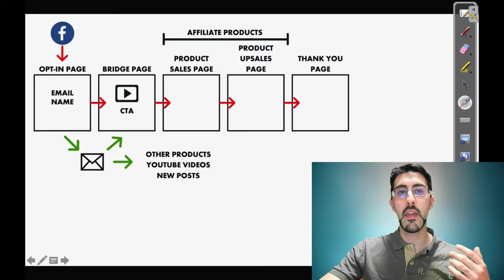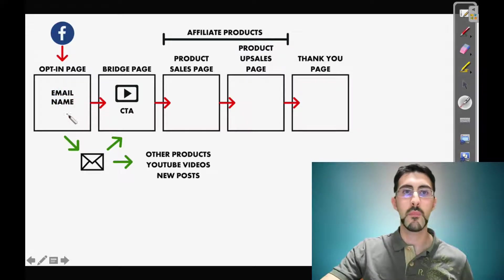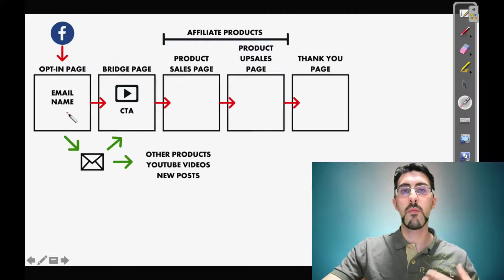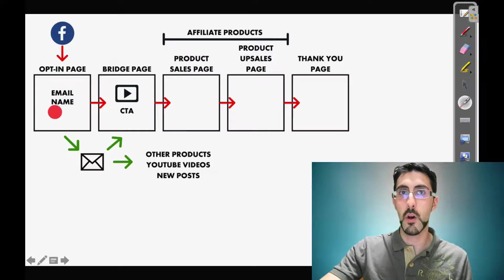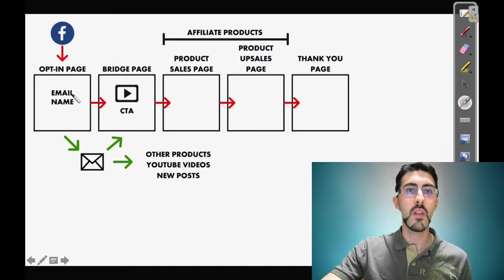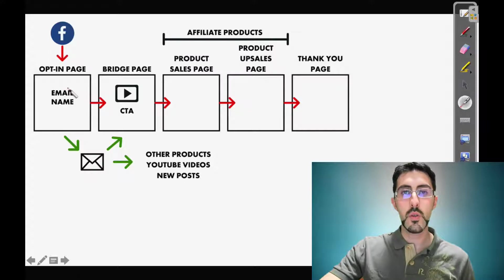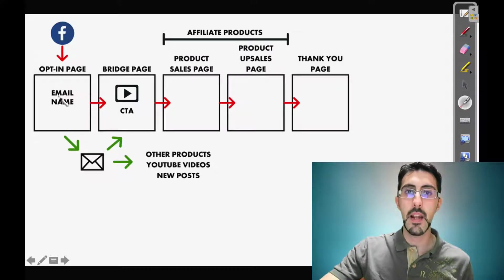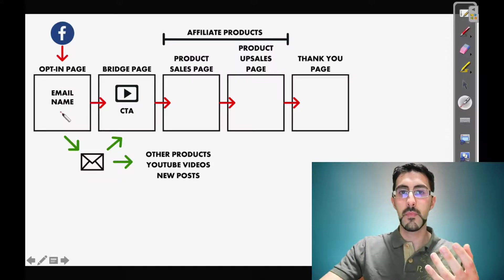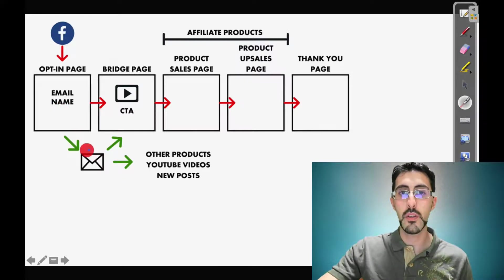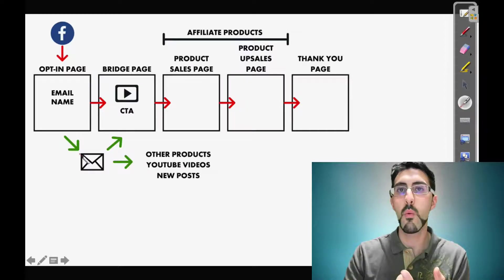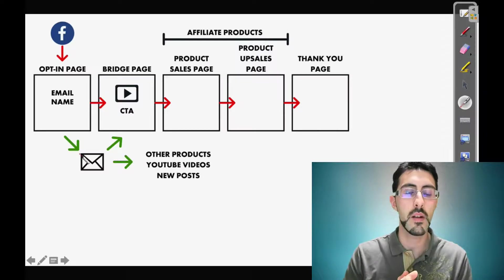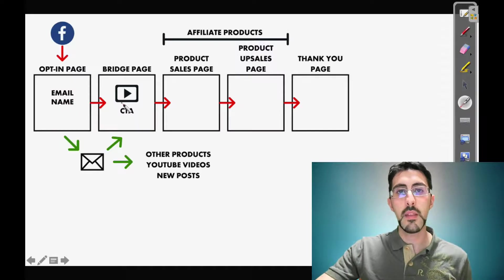On the opt-in page, they are going to leave an email and a name, usually for giving them some valuable information. Once we have collected this email and name, these people are actually our leads. We are going to add them to an email list or any of the autoresponders that you can use like Aweber or whatever, and then we are going to send them directly to a bridge page.